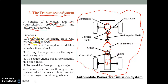So we were talking about the functions of the transmission system. The first function is to disconnect the engine from the road wheels when desired. To connect and disconnect, there is the clutch system. With the help of the clutch, the engine power system connects and disconnects from the rest of the drivetrain.